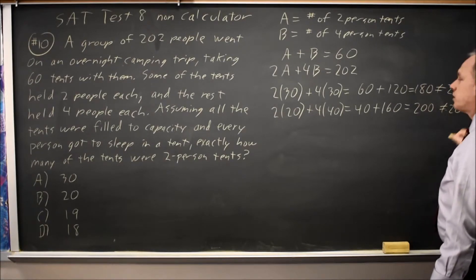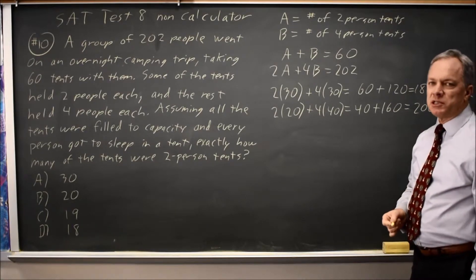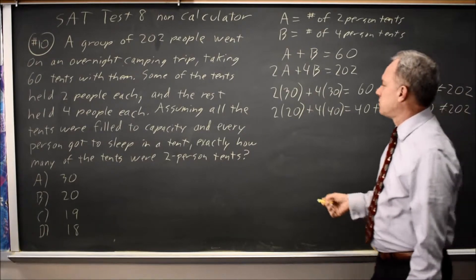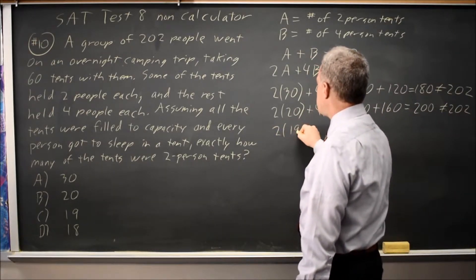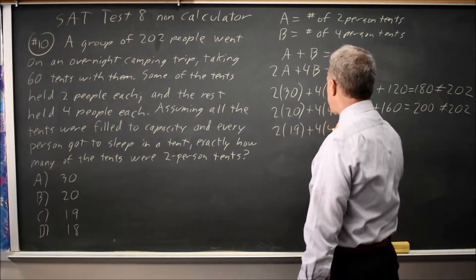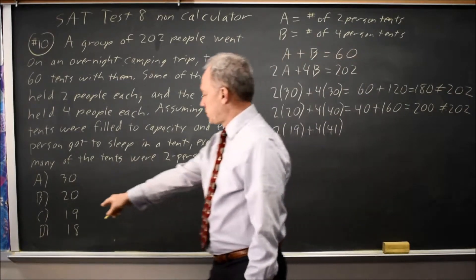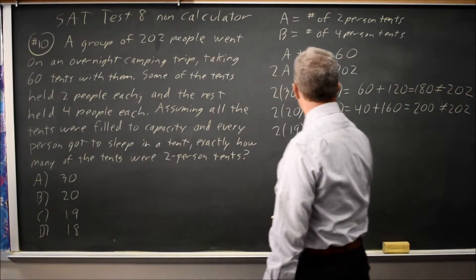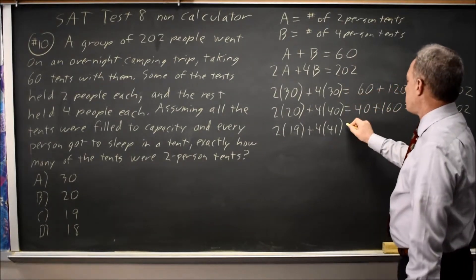That is not 202, but I'm only short by two people. If I turn one of my two-person tents into a four-person tent, that's twice 19 and four times 41. This is choice C, and I suspect it's going to work because they should give me two more people, but let's check.